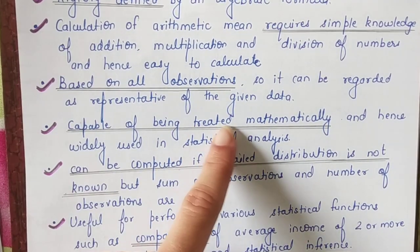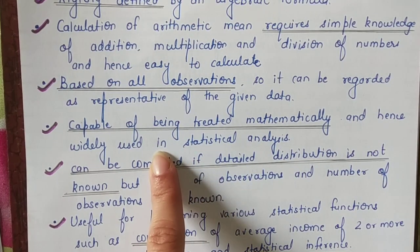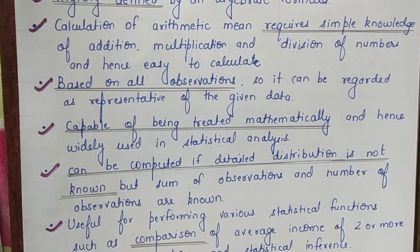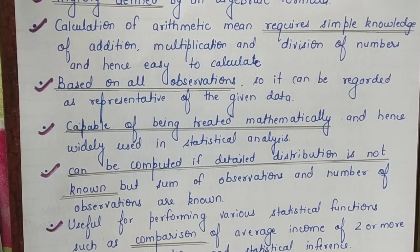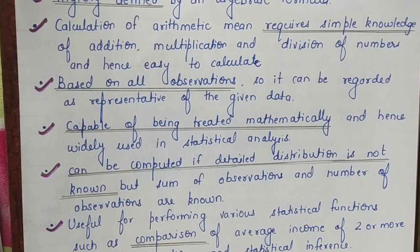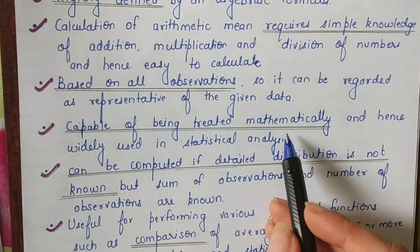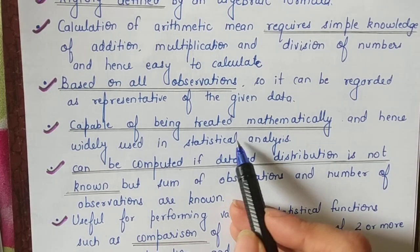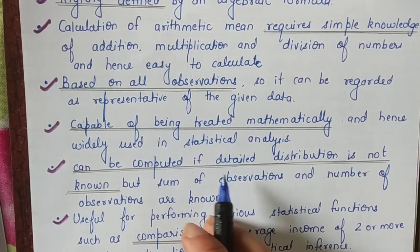Number four: arithmetic mean is capable of being treated mathematically, and hence it is widely used in statistical analysis. There are many tools and measures in statistical analysis — dispersion, kurtosis, skewness, regression, correlation — and some of these tools require the use of the mean. Since arithmetic mean can be further added, multiplied, divided, and treated algebraically, that is why it is used in statistical analysis and research work.